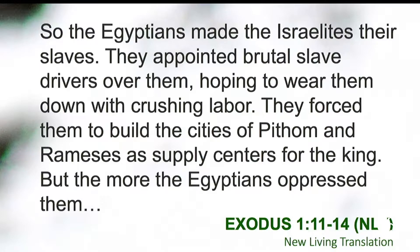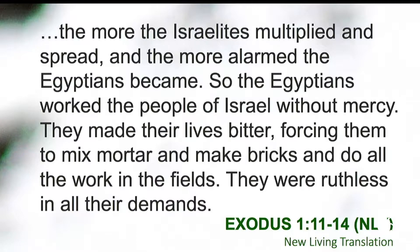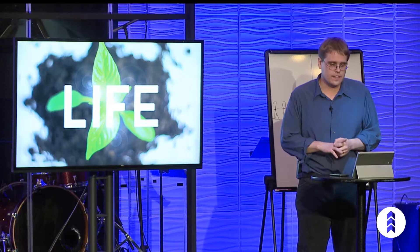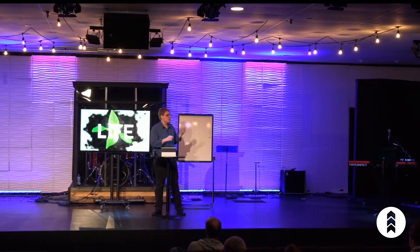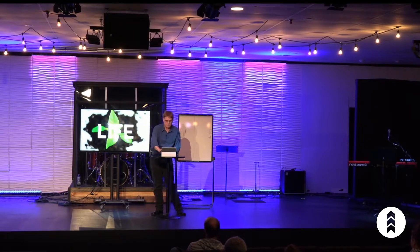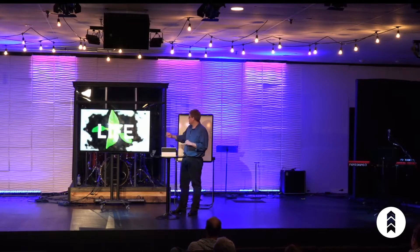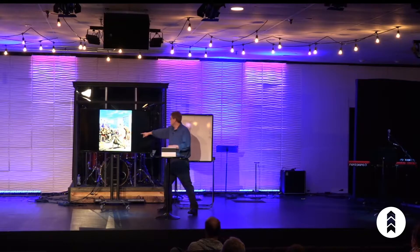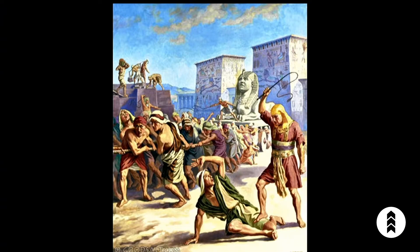So the Egyptians made the Israelites their slaves. They appointed brutal slave drivers over them, hoping to wear them down with crushing labor. They forced them to build the cities of Pithom and Ramses as supply centers for the king. But the more the Egyptians oppressed them, the more the Israelites multiplied and spread, and the more alarmed the Egyptians became. So the Egyptians worked the people of Israel without mercy. They made their lives bitter, forcing them to mix mortar and make bricks and do all the work in the fields. They were ruthless in all their demands. There's an Egyptian beating an Israelite because of how harsh they were.